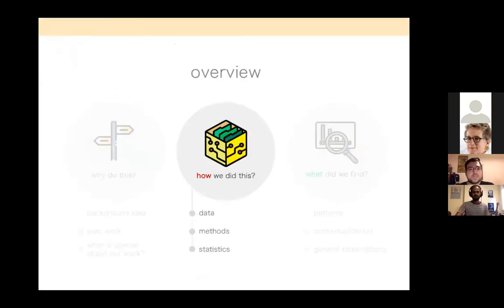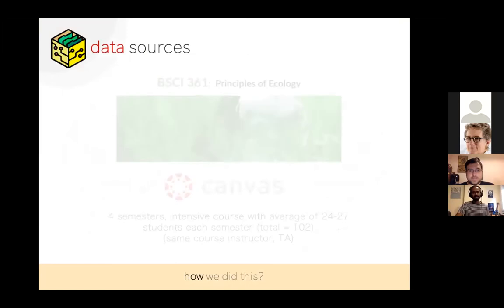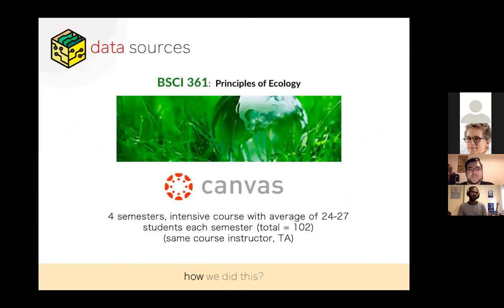So this brings us to the data. This course was called Principles of Ecology. I have data from four semesters of this intensive course with an average of 22 to 27 students each semester. And just for sake of having uniformity, we had the same course instructor and the TA for all the four semesters. We also had the exactly same course structure so that we could actually compare and do the analysis.